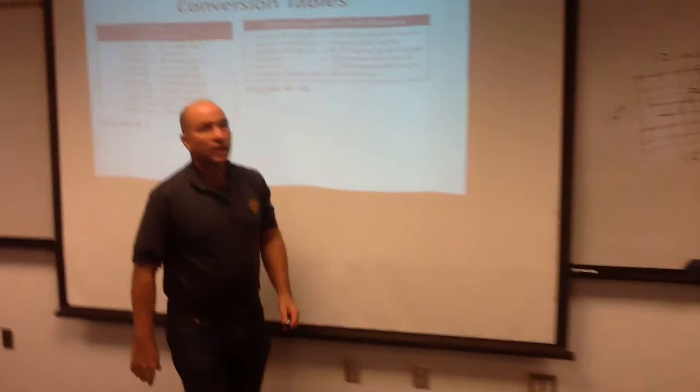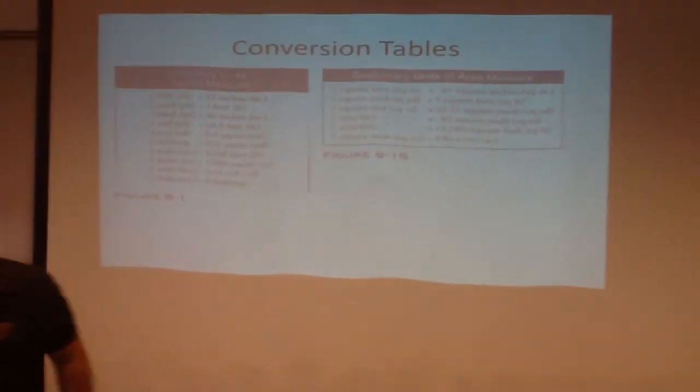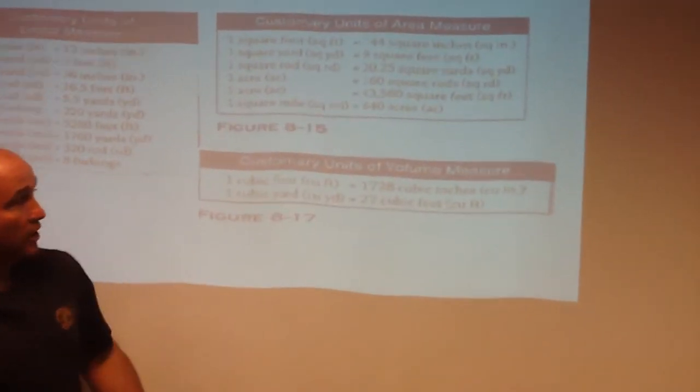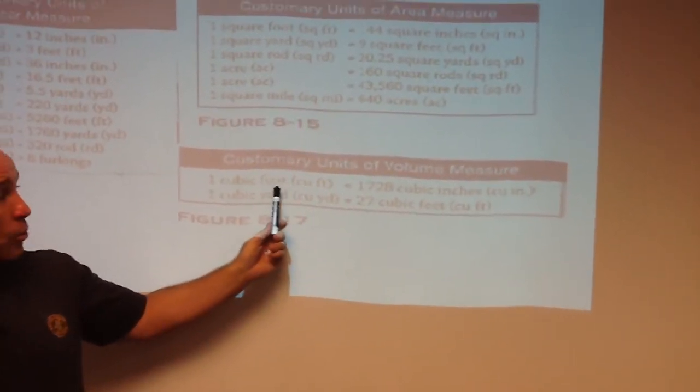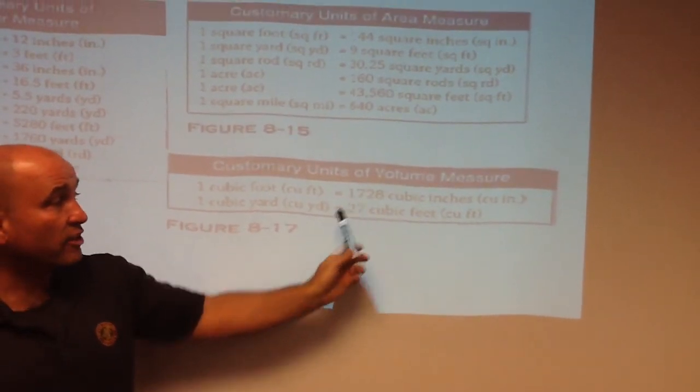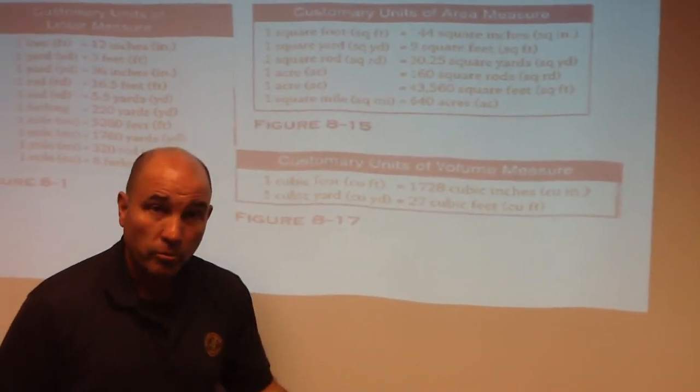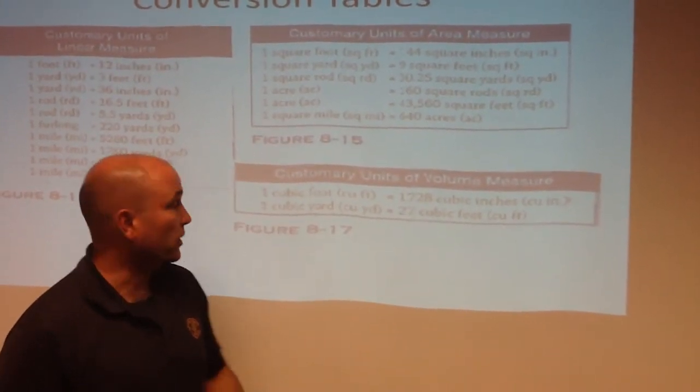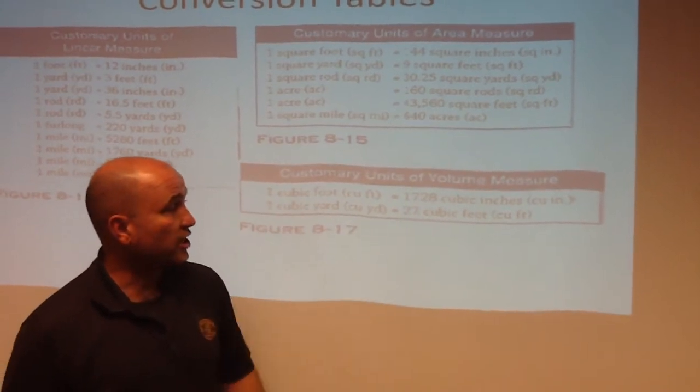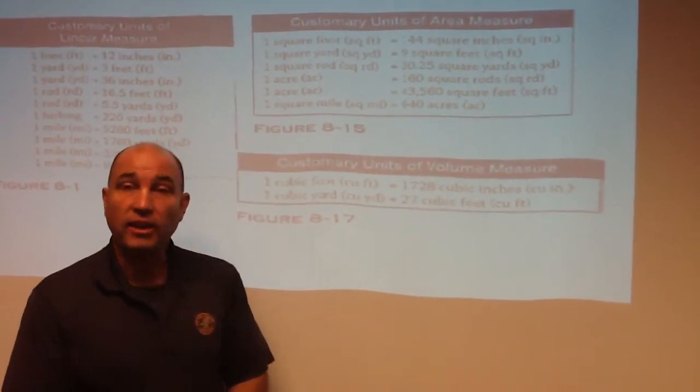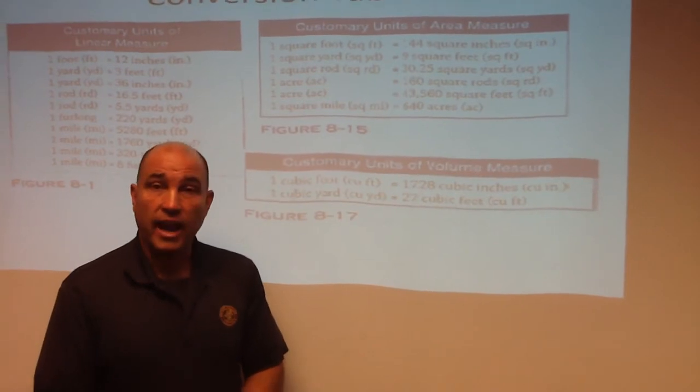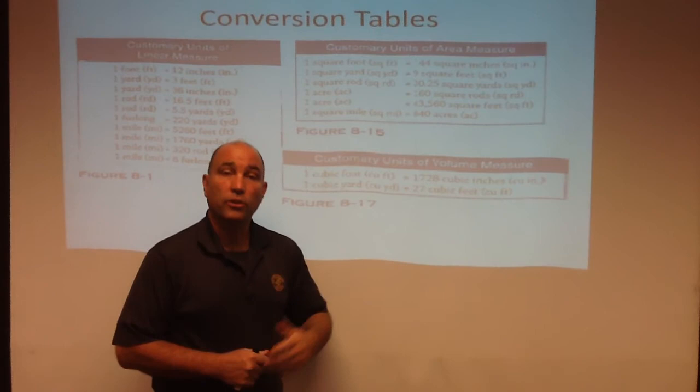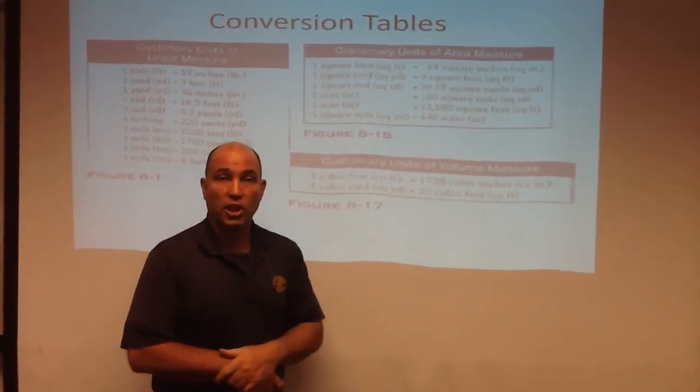I'm going to come back here to the screen. And we can also have other types of conversions. We can do cubic feet. And we can memorize that 1 cubic feet is the same as 1,728 cubic inches. But really, what is this? 12 times 12 times 12 will give you 1,728. Or 1 cubic yard is equal to 27 cubic feet. Well, how did we get that? Well, 3 feet in a yard, 3 feet in a yard, 3 feet in a yard. 3 times 3 times 3 is the same as 27.